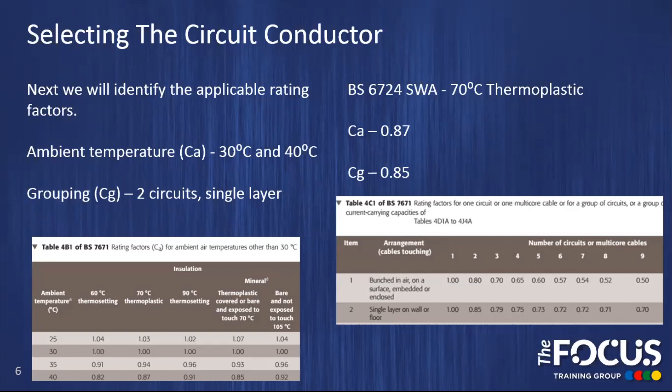We were also given grouping in our scenario, where we had two circuits in a single layer. If we look at table 4C1 of BS 7671, we have the column for the arrangement — cables touching — and if we go down to the bottom it says single layer on a wall or floor. So this is the row we're going to use. If we then go along to the column that has number two at the top because we have two circuits, we can see our rating factor to use is 0.85.